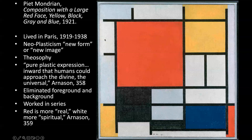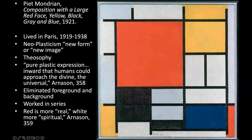He lived in Paris from 1919 until 1938 — that year is relevant, as the Nazis were becoming a danger to Europe. He called this new style neoplasticism — the new form or new image. This one is called Composition with a Large Red Face, Yellow, Black, Gray, and Blue. That's how he named all these pieces — just by their colors and sometimes by their shapes.